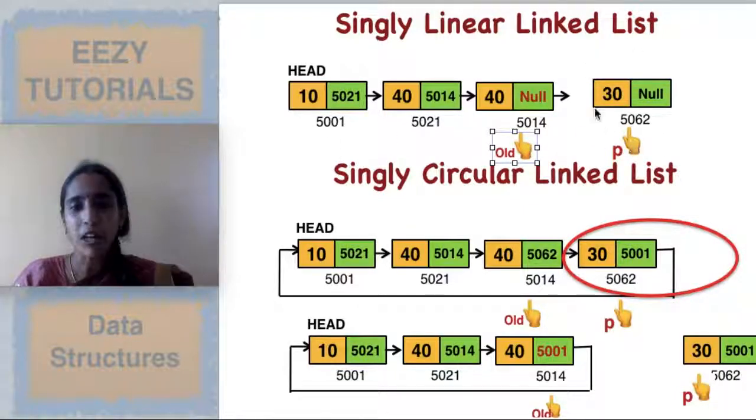In the linear linked list you will have two pointers: old and p. P will be pointing to the last node and old will be pointing to the last but one node, the previous node of the last node. You will make like this. After making this pointer setup you will be making old's next as null and you will be freeing the p or deleting the p. This is what you will do in the linear list.